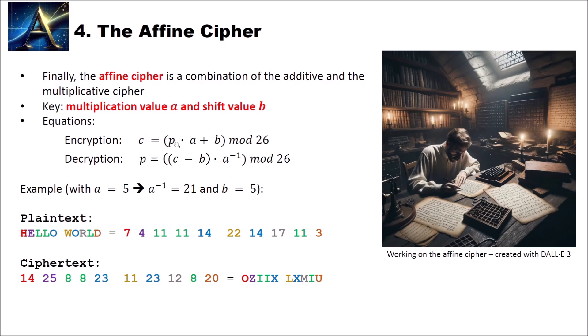We also have equations. To encrypt, we first multiply our plaintext letter with our multiplication value a. And then we add the b and compute mod 26. To reverse this, we first have to, from our ciphertext letter or the number of the ciphertext letter, subtract the b again. And then we have to multiply the result with the inverse of a.